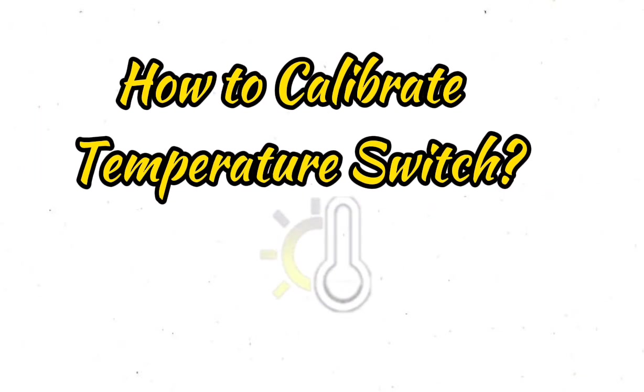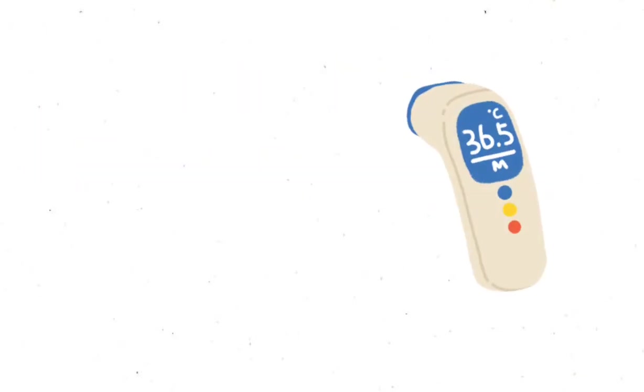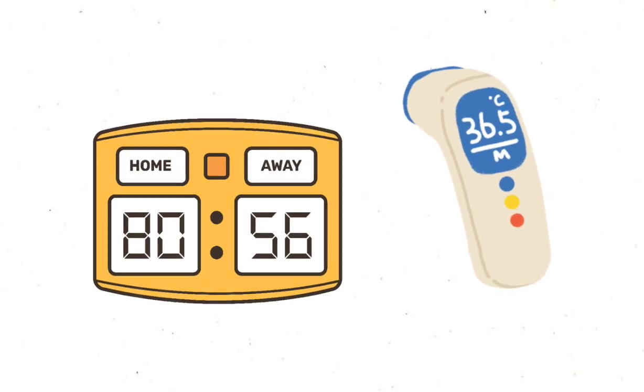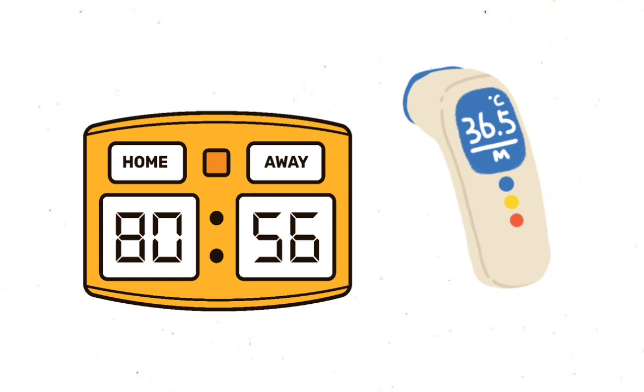How to calibrate temperature switch. Temperature switches are used to monitor the temperature and trip the process or stop sequence as per programming when the temperature switch reaches the set temperature.